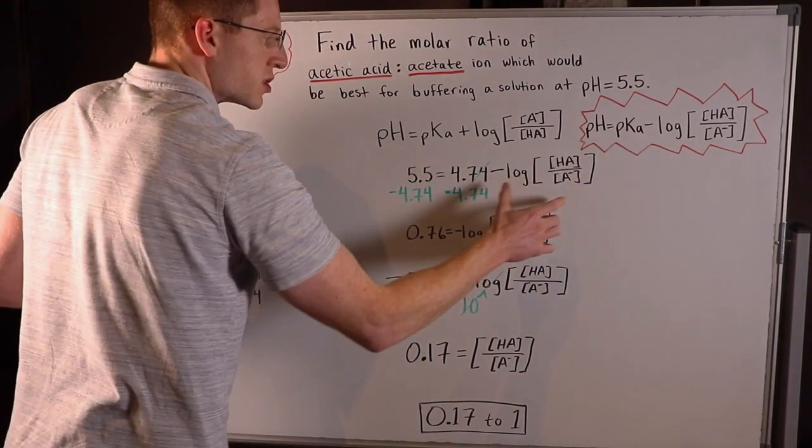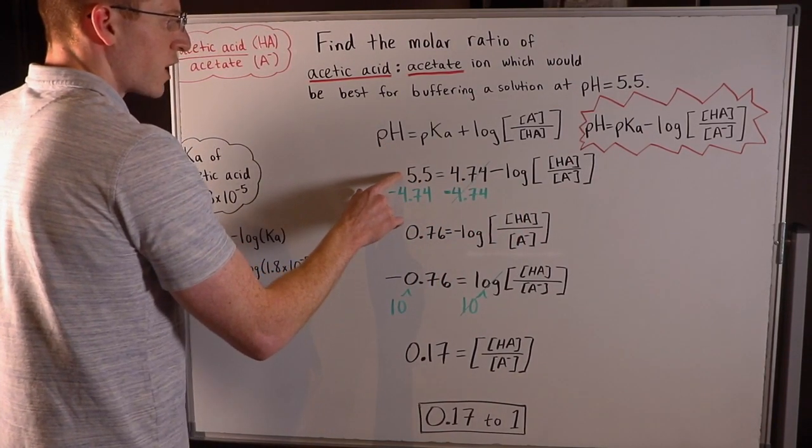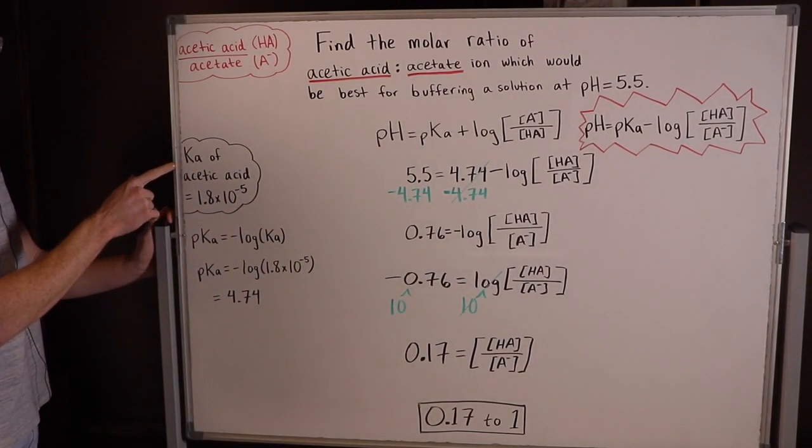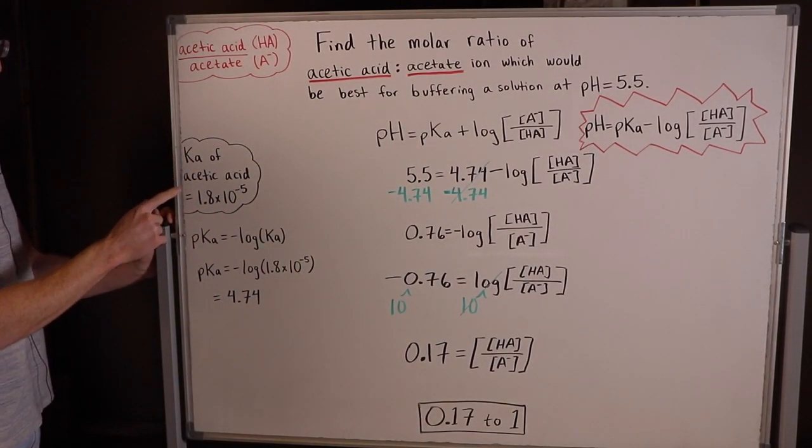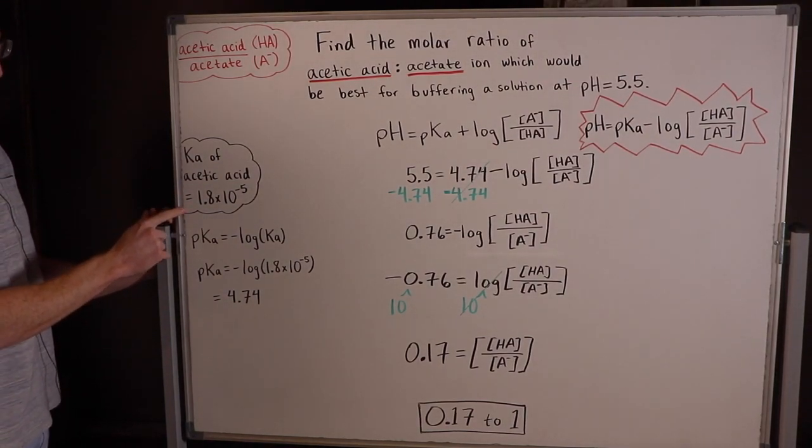So I went ahead and brought this equation down here and plugged in some of my numbers. So I knew the pH was 5.5, but to find the pKa, I had to know that the Ka of acetic acid is 1.8 times 10 to the negative 5. You can find this on a table that you should have access to.